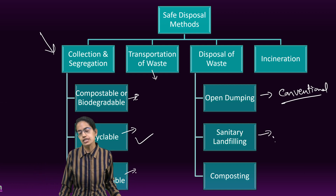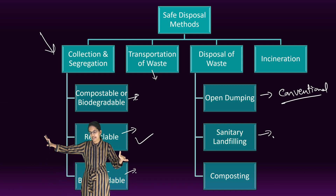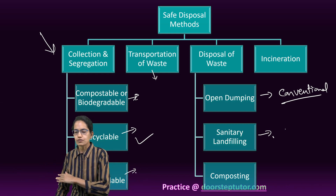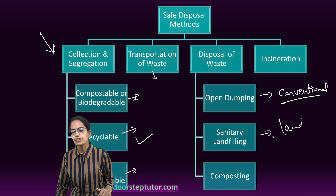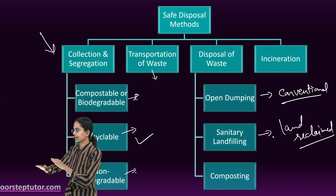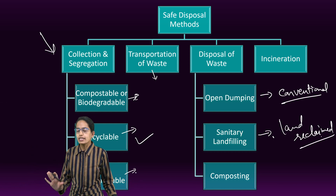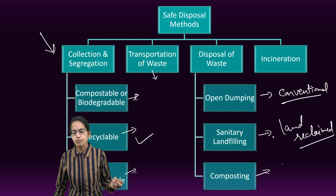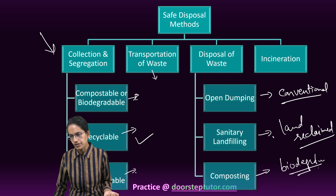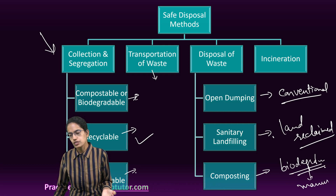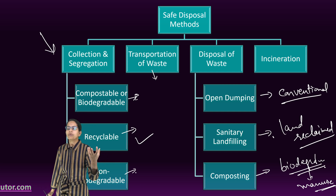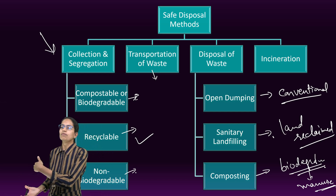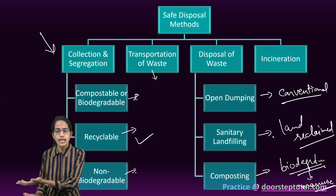The next is sanitary landfilling. Low-lying areas are dug, waste is collected in that area, and the layer is filled with soil. Once filled, the land can be reclaimed — used for creating a children's park or a garden area. The next method is composting: take biodegradable waste and convert it into manure. This could be animal excreta, leftover food, or vegetable peelings, which over time get converted into manure that can replace artificial fertilizers.